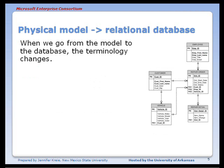When we go from the physical model to the relational database, we start using different terminology. So instead of saying entity, an entity becomes a table, because in the actual database we're going to build a table for that entity.